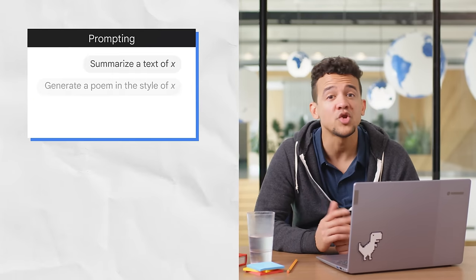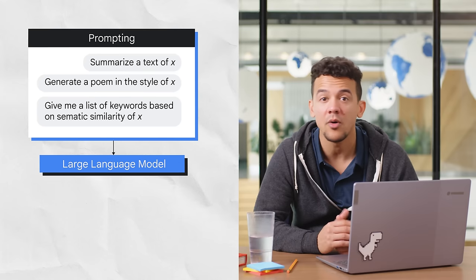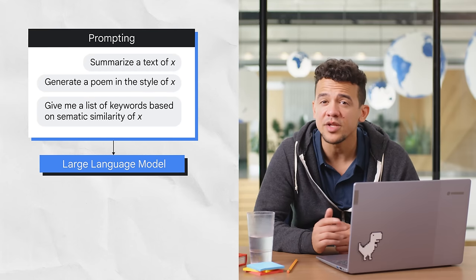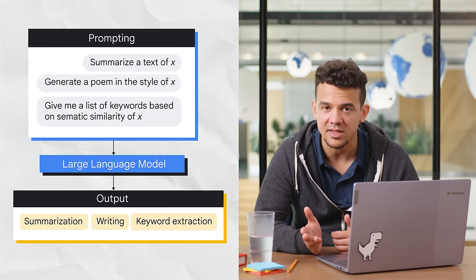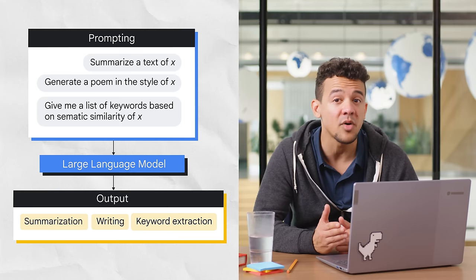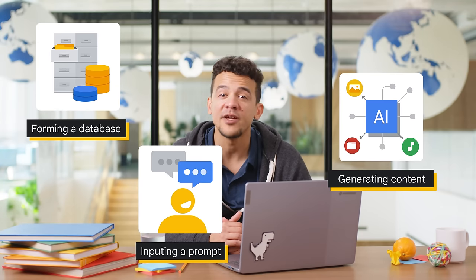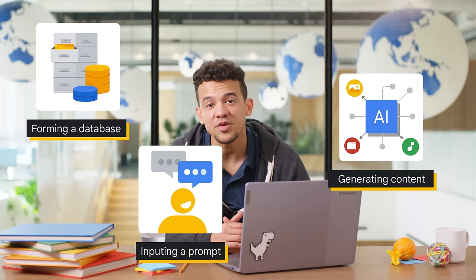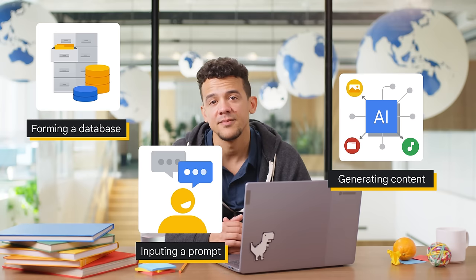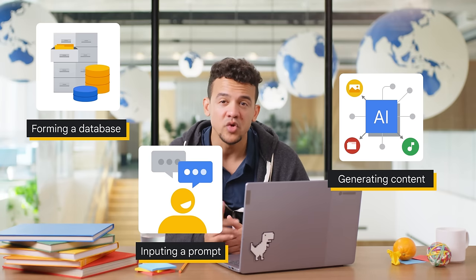Let's pivot slightly and talk about prompts. A prompt is a short piece of text that is given to a large language model, or LLM, as input, and it can be used to control the output of the model in a variety of ways. Prompt design is the process of creating a prompt that will generate the desired output from an LLM. Generative AI depends a lot on the training data that you have fed into it — it analyzes the patterns and structures of the input data and thus learns. But with access to a browser-based prompt, you the user can generate your own content.